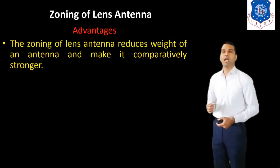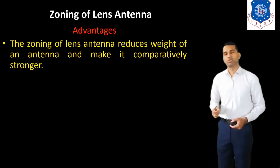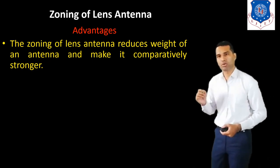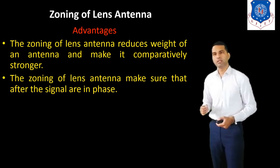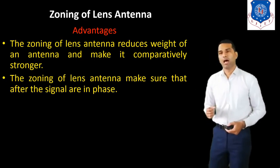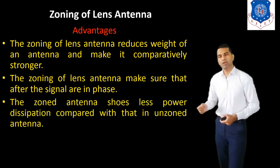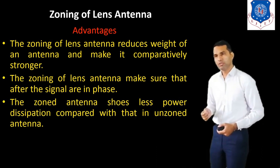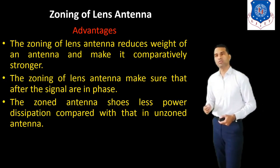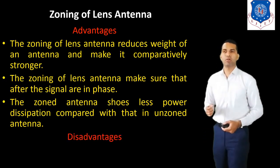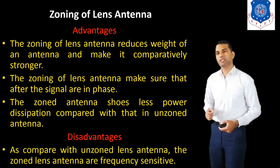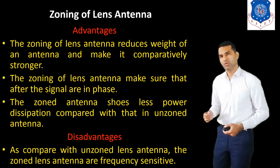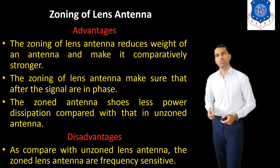Now we discuss the advantages of zoning. First, zoning of the Lens Antenna reduces the weight of the antenna and makes it comparatively stronger. Second, zoning of the Lens Antenna ensures that the signals are in phase. Third, the zoned antenna lens has lower power dissipation compared with the unzoned antenna. However, there is also a disadvantage: compared with the unzoned Lens Antenna, the zoned Lens Antenna is frequency sensitive.